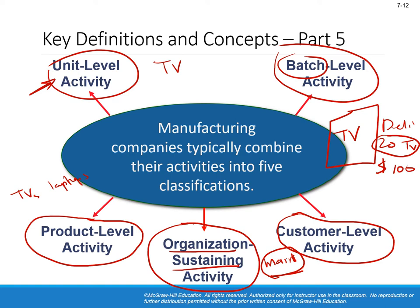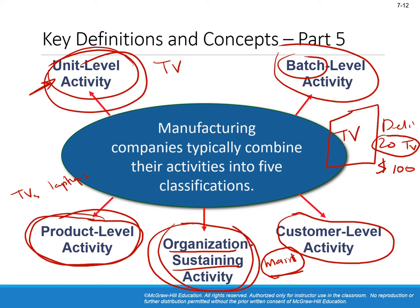What matters is that you need to understand that some of these are product costs — such as the unit activity example or the marketing campaign activity — and some are non-product costs such as the janitor or security salaries. Still, under ABC costing, these are part of the cost of goods sold.